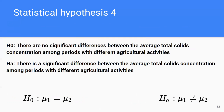The fourth hypothesis is that there is no significant difference between the average total solids concentration among periods with different agricultural activities. The categorical variable time two has two levels: from 2009 to 2014, and from 2015 to 2018. An agricultural activity change was introduced in 2014. We will calculate the average total solids concentration in each period to see if it was affected by that change.